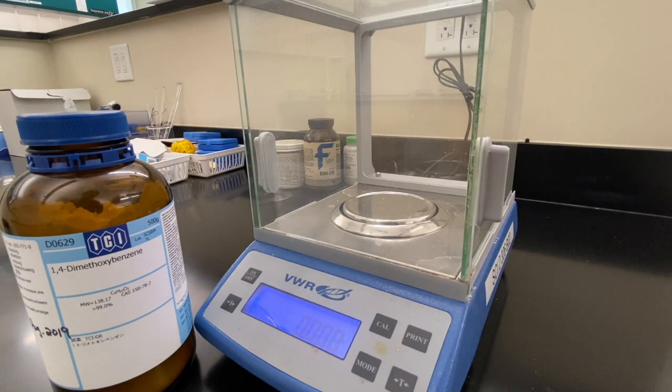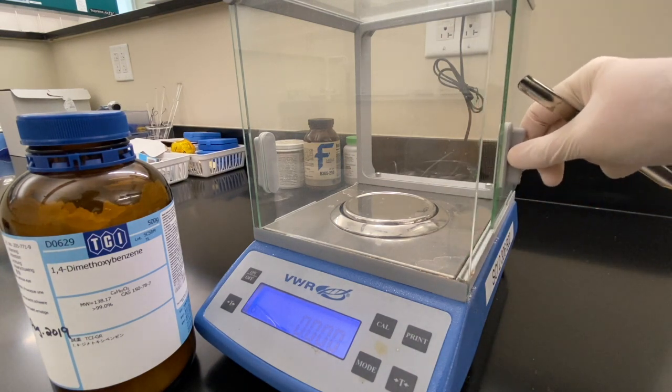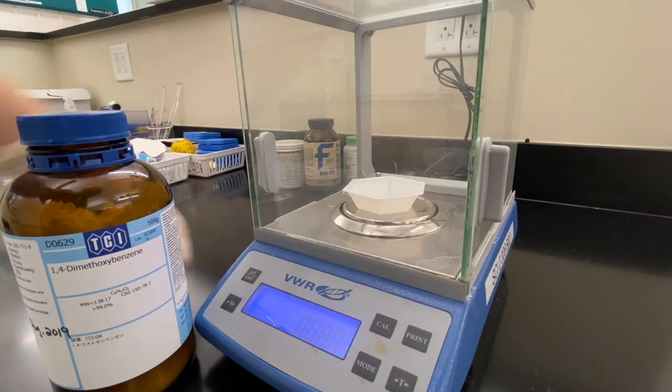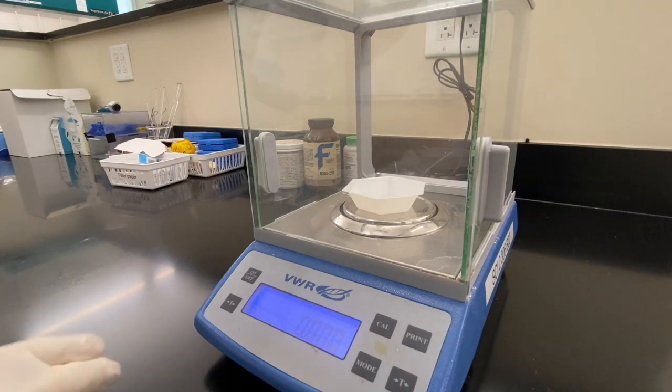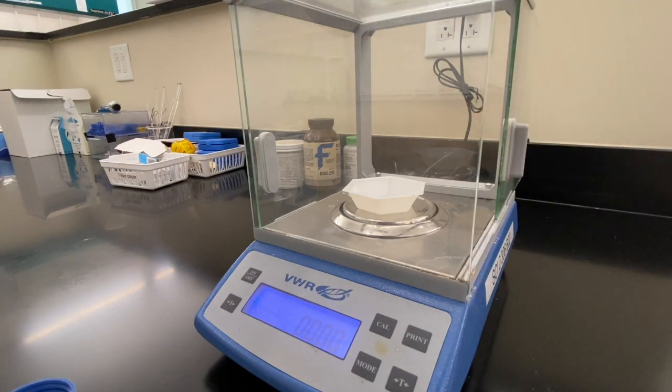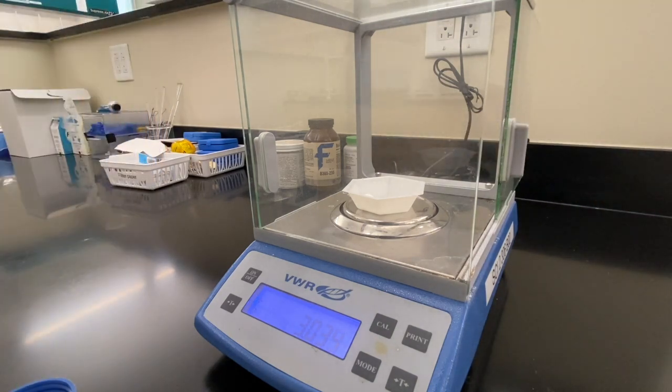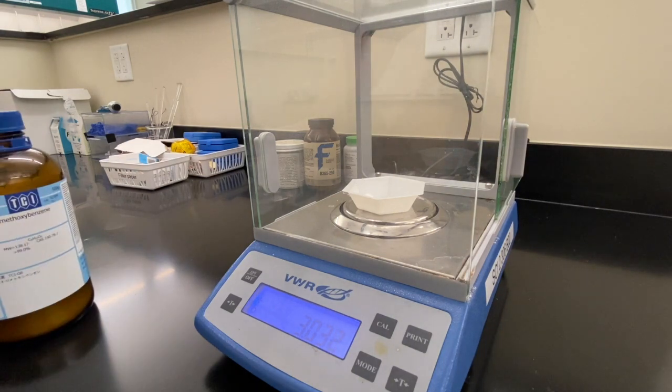So we're going to weigh up the 2,4-dimethoxybenzene. Make sure you tare it. We're going to need 3 grams or as close to it as we can reasonably get. That's good enough. So there you go, you have your mass and we should be good to go for the next part.